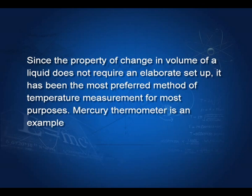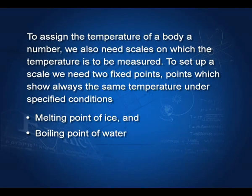When I assign temperature, I also have to assign a number — for example, my body temperature is 37 degrees Celsius; 37 is a number. Whenever we measure temperature, we must have a scale on which to measure. To devise a scale, we need two reference points on every scale. The melting point of ice and the boiling point of water at specified conditions are chosen because these are very stable, reproducible points.